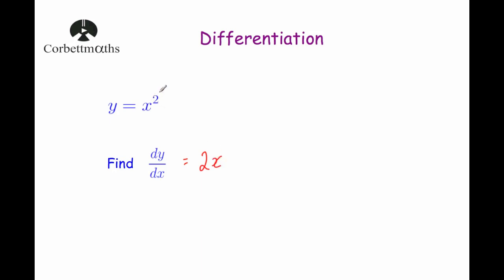Then we look at the power. The power here is 2. When you reduce that by 1, well 2 take away 1 is 1. So the answer would be 2x to the power of 1. We don't usually write something to the power of 1, so we just get rid of that power and the answer is 2x. So if we're given y equals x squared, dy by dx, or the gradient function, would be 2x.